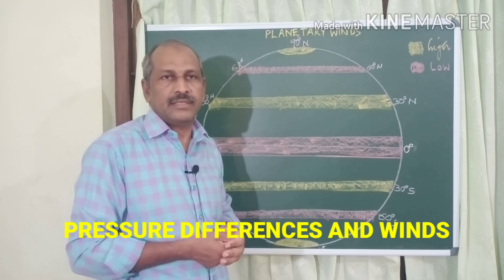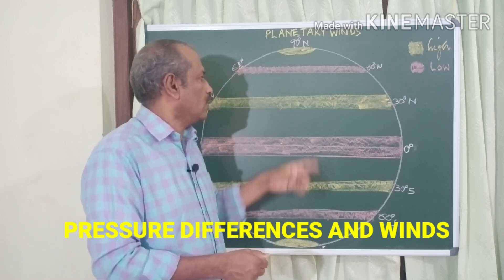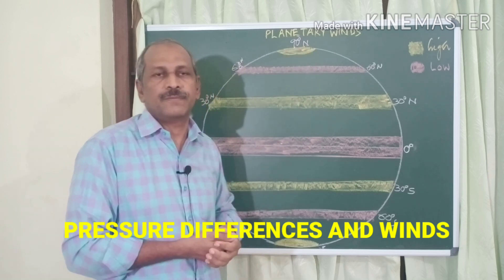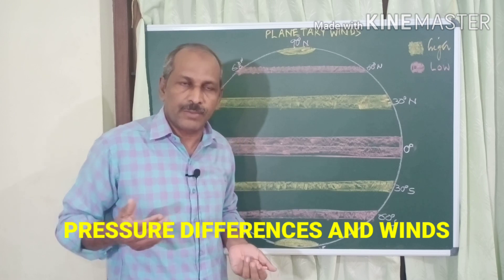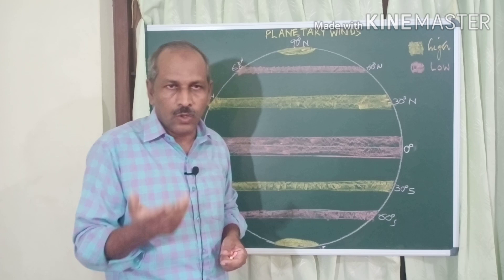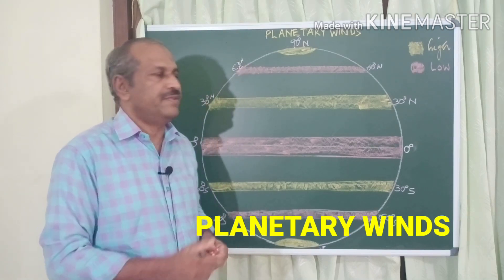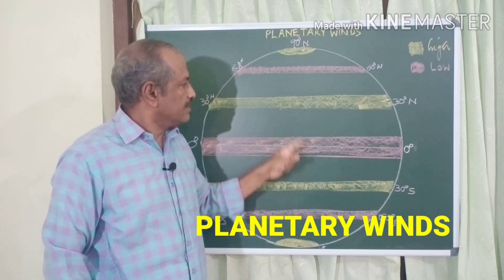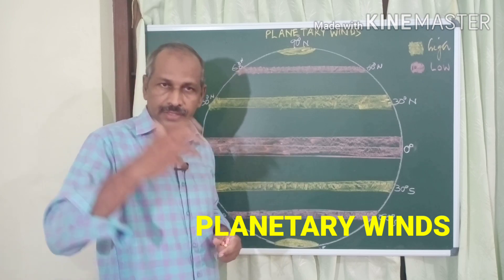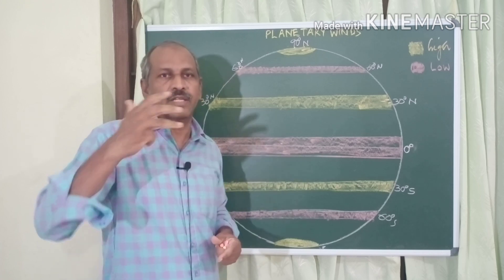We know that wind blows from high pressure to low pressure. Winds developed between global pressure belts are generally called planetary winds, global winds, or permanent winds.